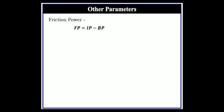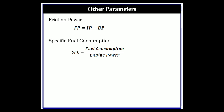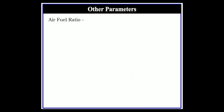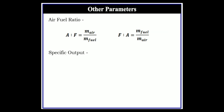Friction power: friction power equals IP minus BP, or equivalently, IP equals BP plus friction power. Specific fuel consumption is fuel consumption divided by engine power. Brake specific fuel consumption (BSFC) equals mass of fuel divided by brake power; indicated specific fuel consumption equals mass of fuel divided by indicated power. Air-fuel ratio is mass of air divided by mass of fuel; fuel-air ratio is the inverse.